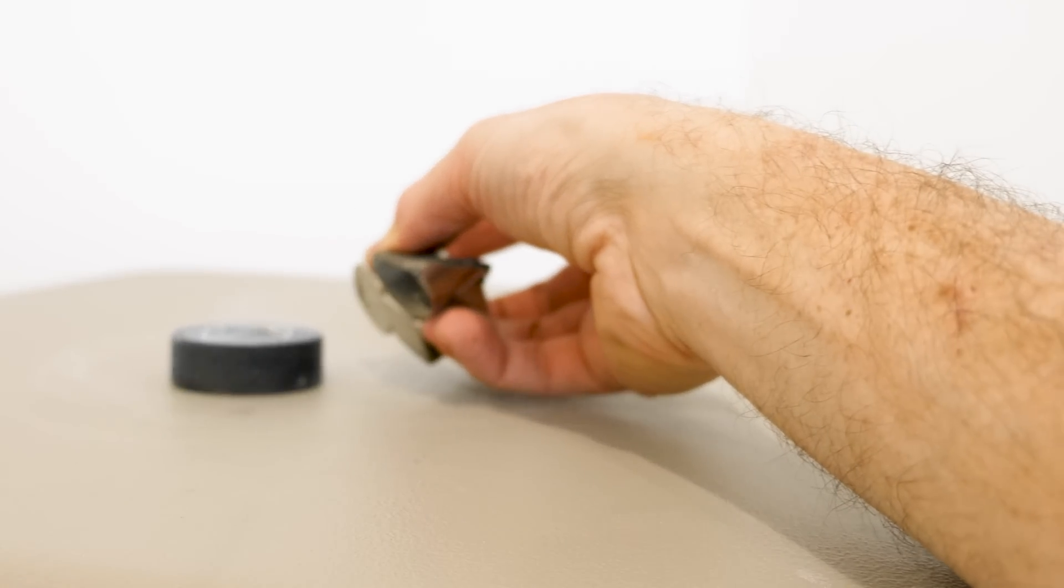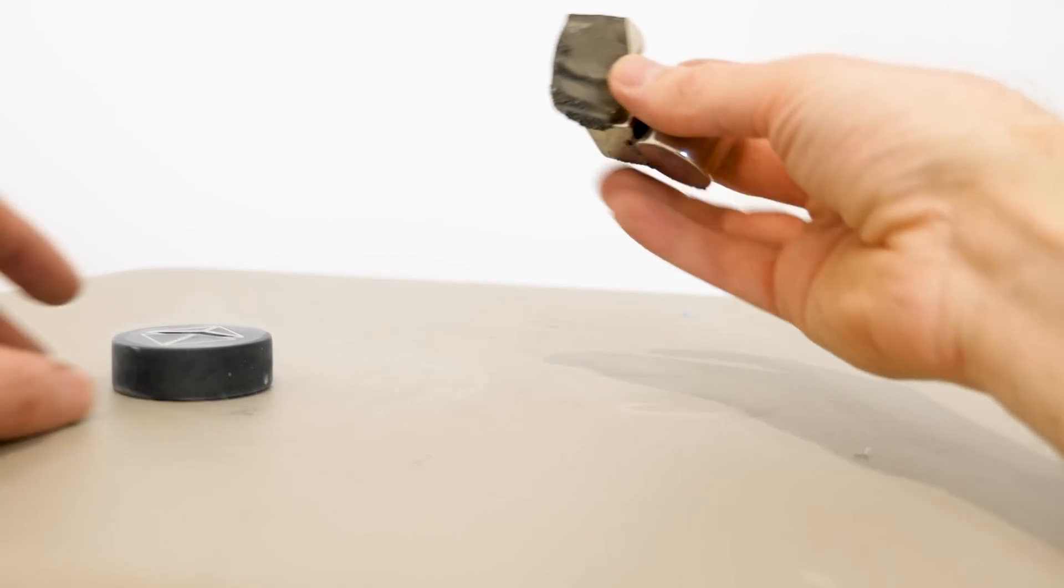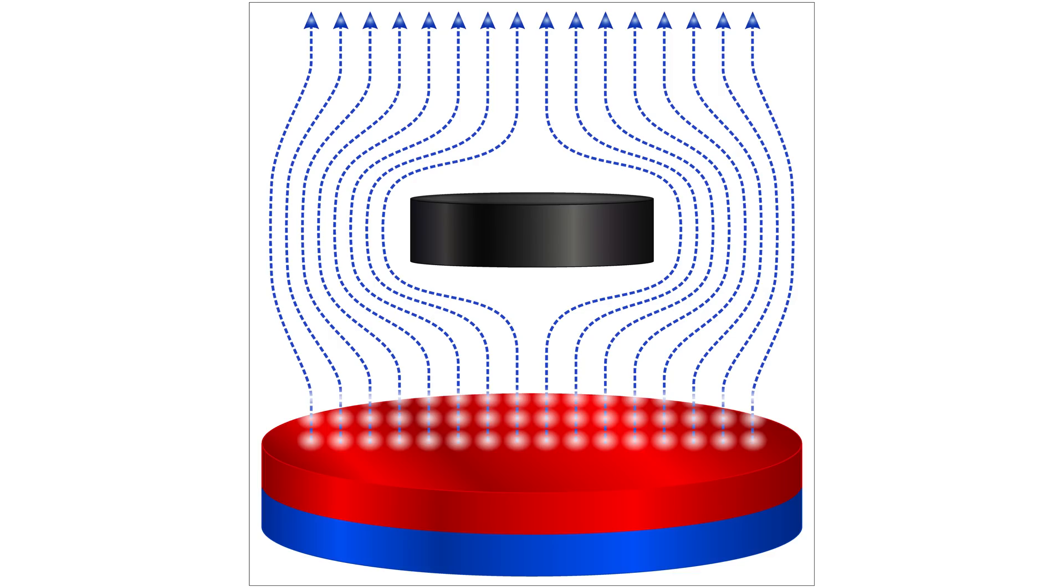In fact, superconductors are perfect diamagnetics. This effect is called the Meissner effect. The magnetic flux is completely expelled from the superconductor.